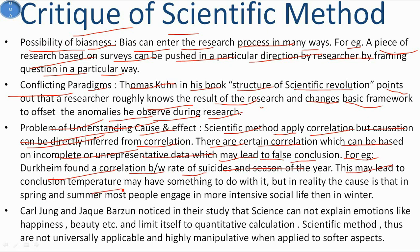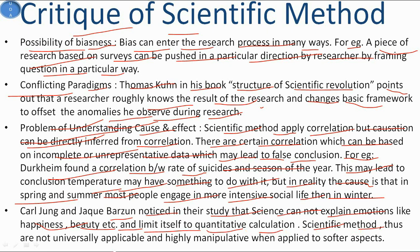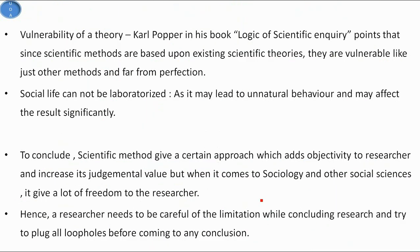Certain correlations based on biased, incomplete, or unrepresentative data can lead to false conclusions. For example, Durkheim found a correlation between rate of suicide and season of the year, which might suggest temperature plays a role, but in reality the cause is that in spring and summer people engage in more intensive social life than in winter. Carl Jung and Jack Burzo noted that science cannot explain emotions like happiness or beauty and limits itself to quantitative calculations. Scientific method is also not universally applicable and is highly manipulative when applied to softer aspects of human life.